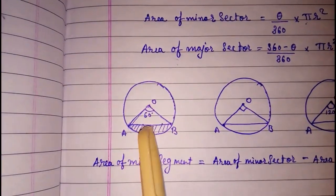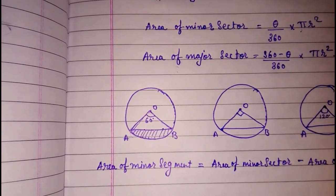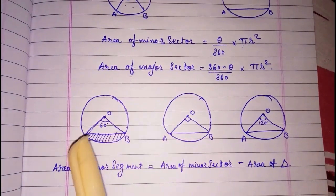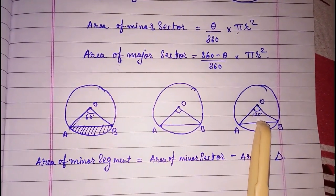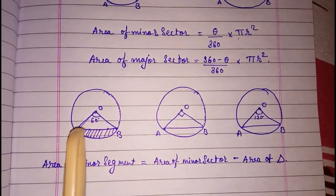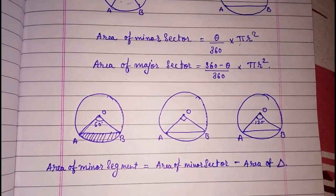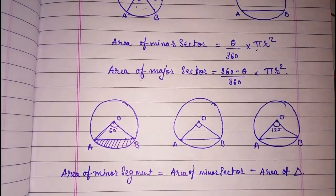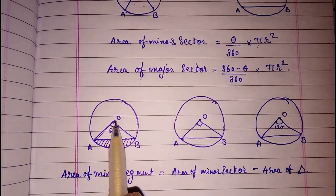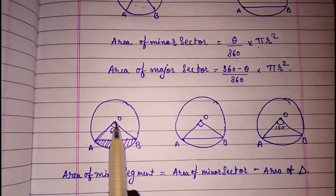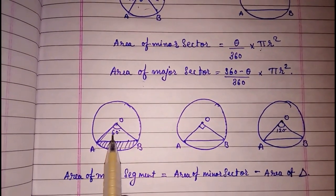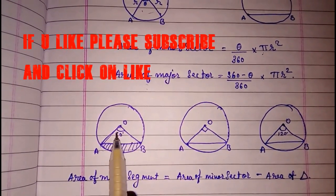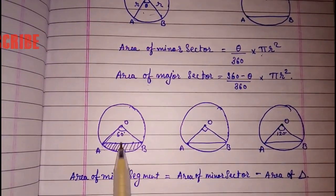Here I have shown three figures with three angles: 60 degrees, 90 degrees, and 120 degrees. In this chapter, you will get either 60, 90, or 120 only. Whenever 60 degrees is there, we can find the area of the triangle using the equilateral triangle formula, since the two sides are radii and the two base angles will be equal. So it forms an equilateral triangle. The formula is: area of equilateral triangle equals root three upon four A square. Find the area of the sector, then subtract this area.